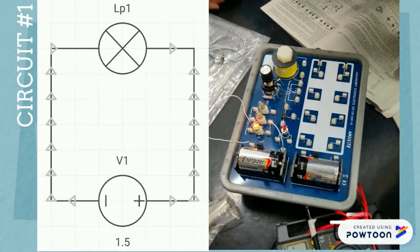The light bulb in circuit number 1 shows a high intensity of light since it was arranged in series where the current flows directly to the light bulb.